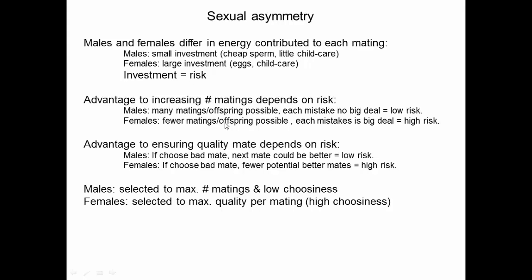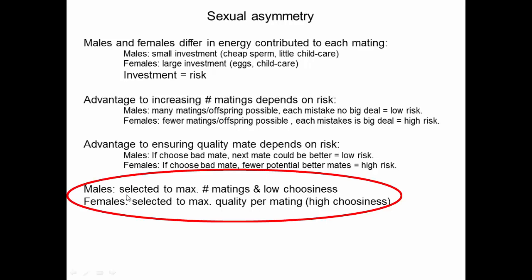Because there's an advantage to males mating with many partners since they're not risking much with each, whereas females are risking a lot, there's not really an advantage to mating more for females — there is for males. On the other hand, there's not much advantage for males to be too choosy or picky, whereas for females there is an advantage to being choosy. This leads to different types of selection in males and females. In general, males are selected to maximize the number of offspring while having low choosiness, while females are selected to maximize quality per mating, resulting in high choosiness.